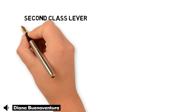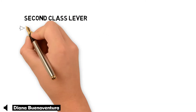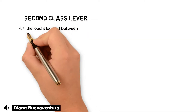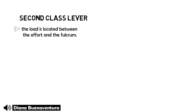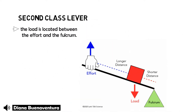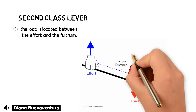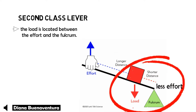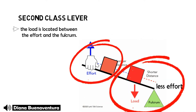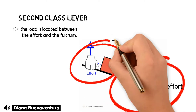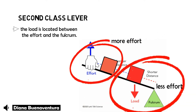In a second class lever, the fulcrum is not in the middle of the beam. The load is located between the effort and the fulcrum. If the load is closer to the fulcrum than the effort, then less effort is required to move the load. If the load is closer to the effort than the fulcrum, then more effort is required to move the load.